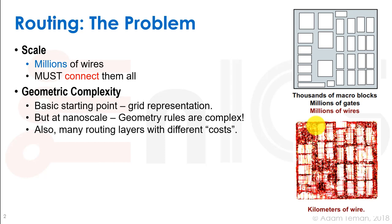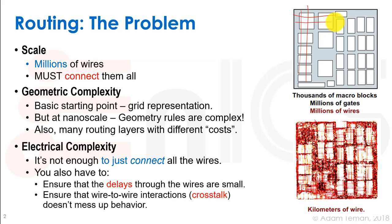For a basic starting point, we'll take a grid representation — our chip is divided into very fine grids. But at nanoscale the geometry rules are very complex and we have to route according to these rules. There are different routing layers with different costs, so we may want to route at a certain layer with certain rules. The electrical complexity is also hard: it's not just enough to connect the wires — we also have to ensure delays are small and that wire-to-wire crosstalk doesn't mess up behavior.